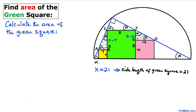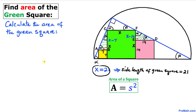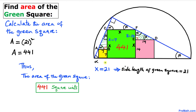Now for the final step: let's calculate the area of the green square. Using the area formula — area equals s squared — with side length 21, the area of the green square is 21 squared, which equals 441. So the area of the green square is 441 square units, and that's our final answer.